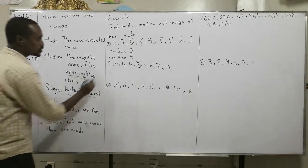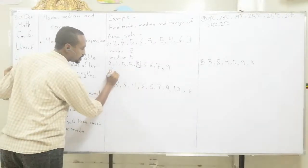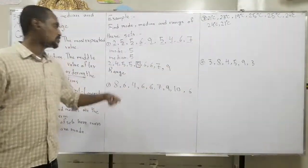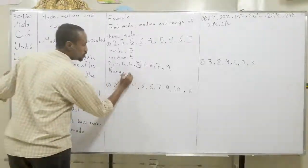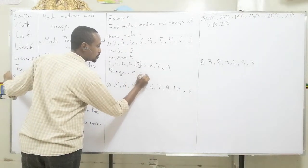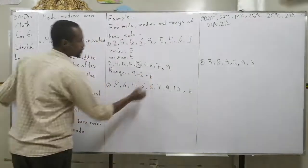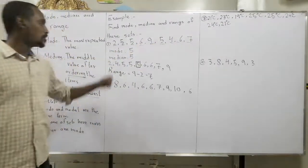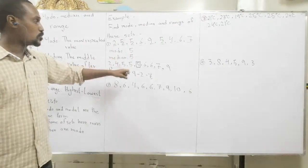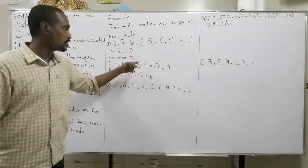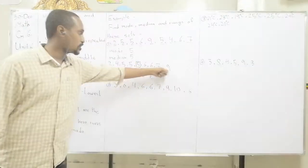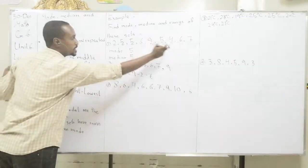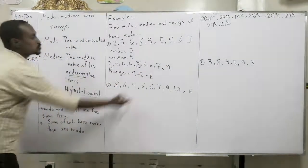Let's find the last one — range. Highest minus lowest. What is the highest value? Nine. The lowest value? Two. So: nine minus two equals seven. That means mode is five because it's the most repeated number, median is five because after ordering I find the number in the middle, and the range — highest minus lowest — is seven.